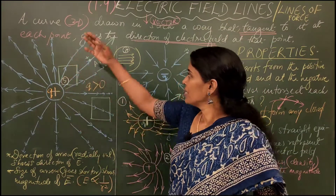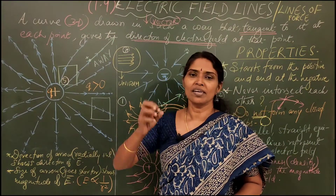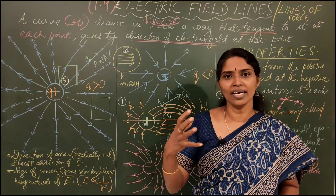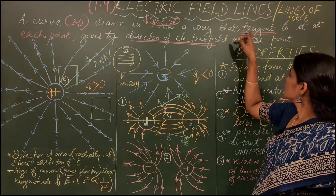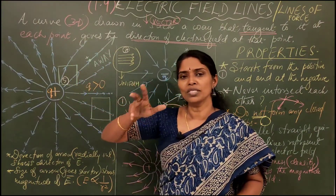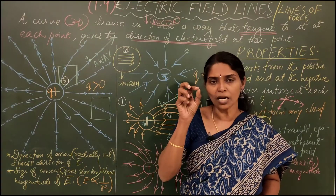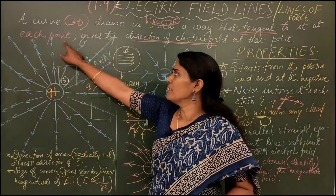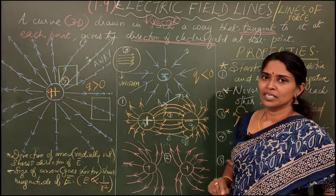It is probably a 3D representation because the electric field exists around a space itself. So we use a 3D curve drawn in such a manner that the tangent to it at each point gives the direction of the electric field at that point.